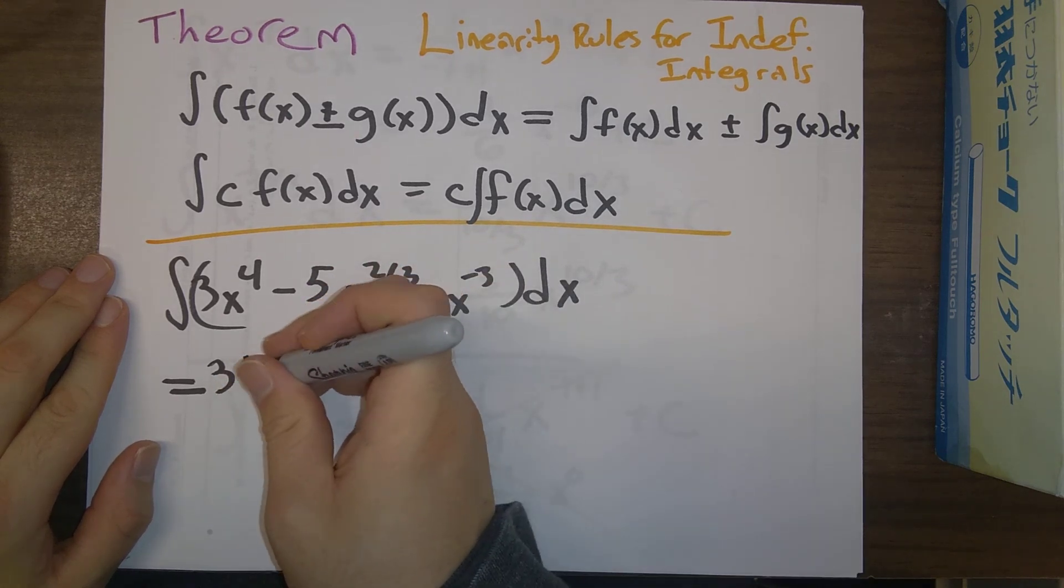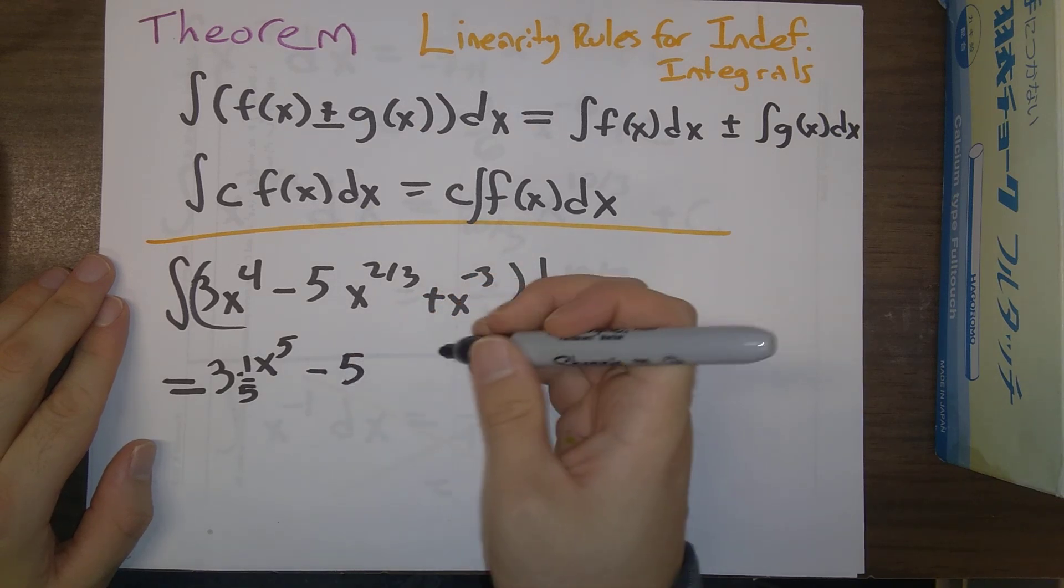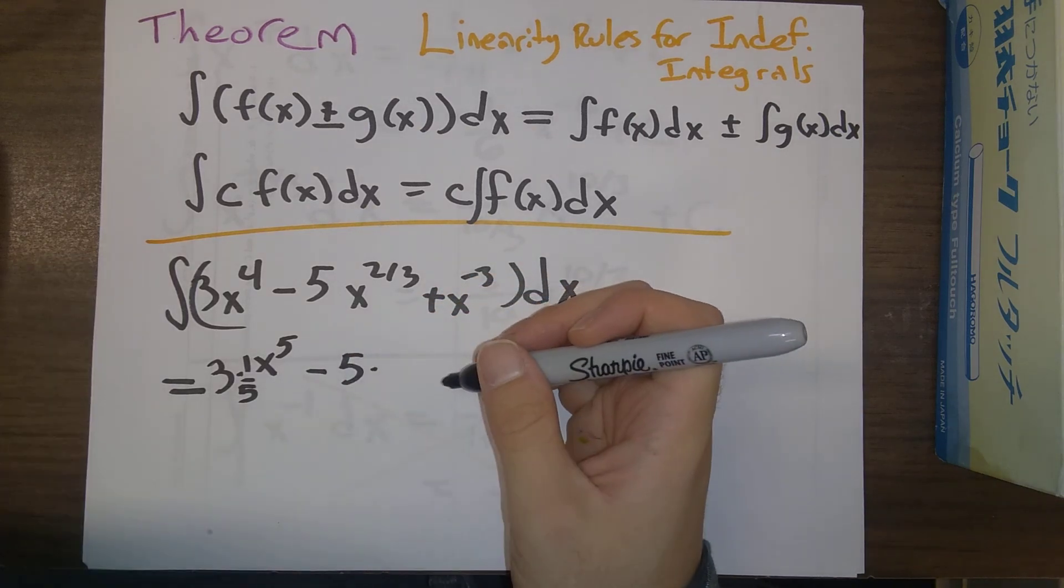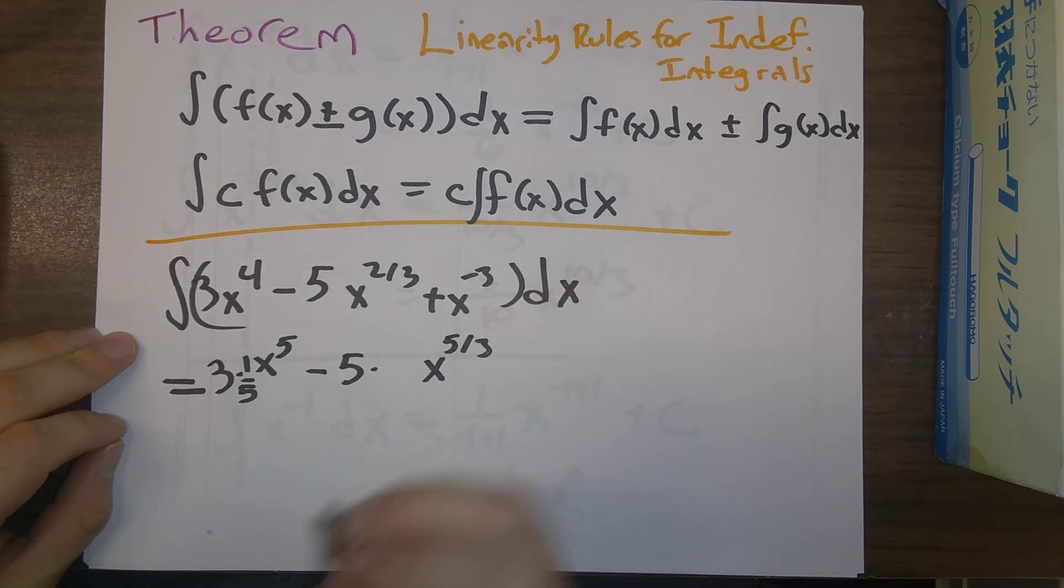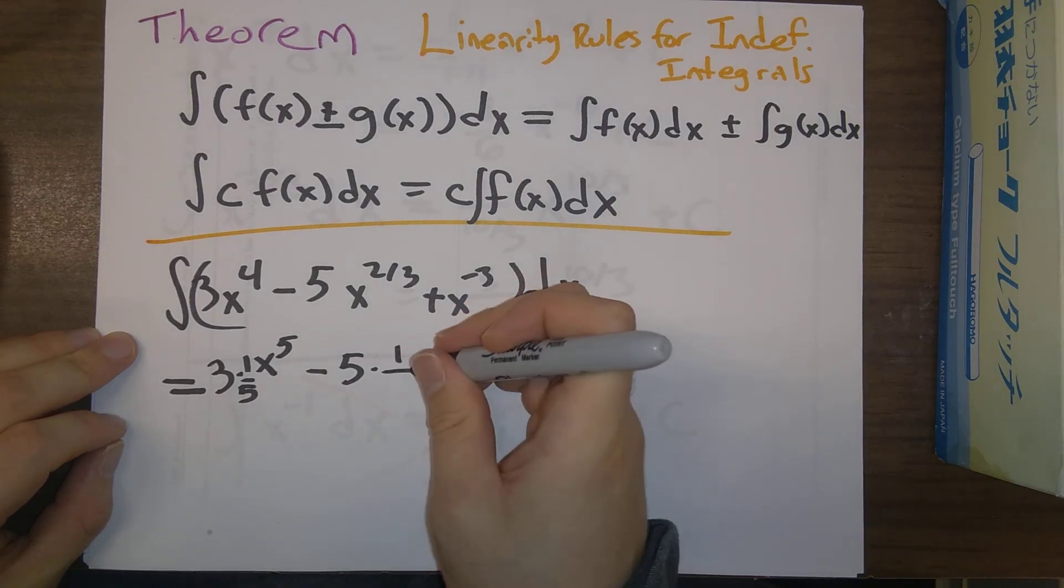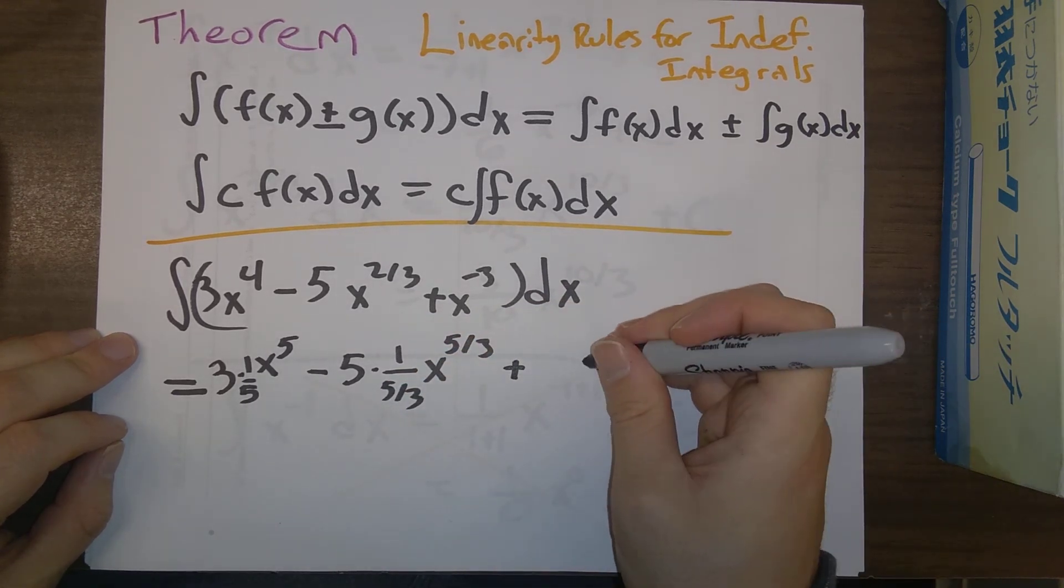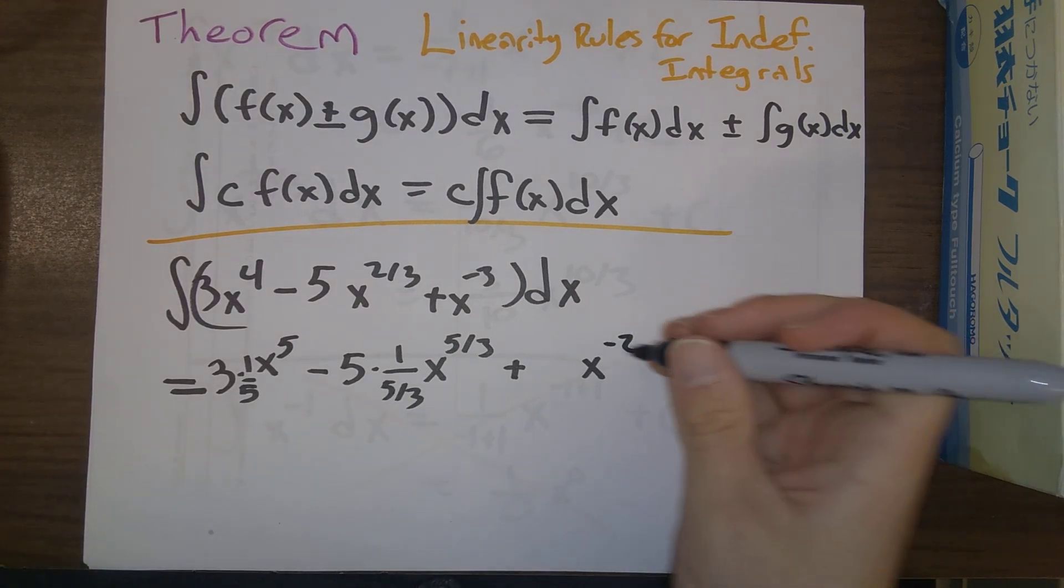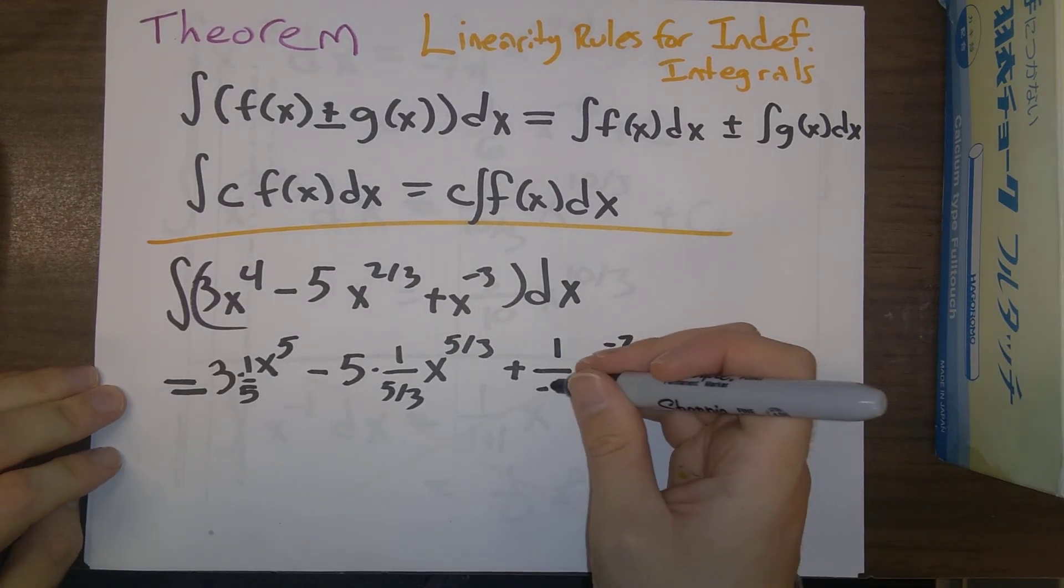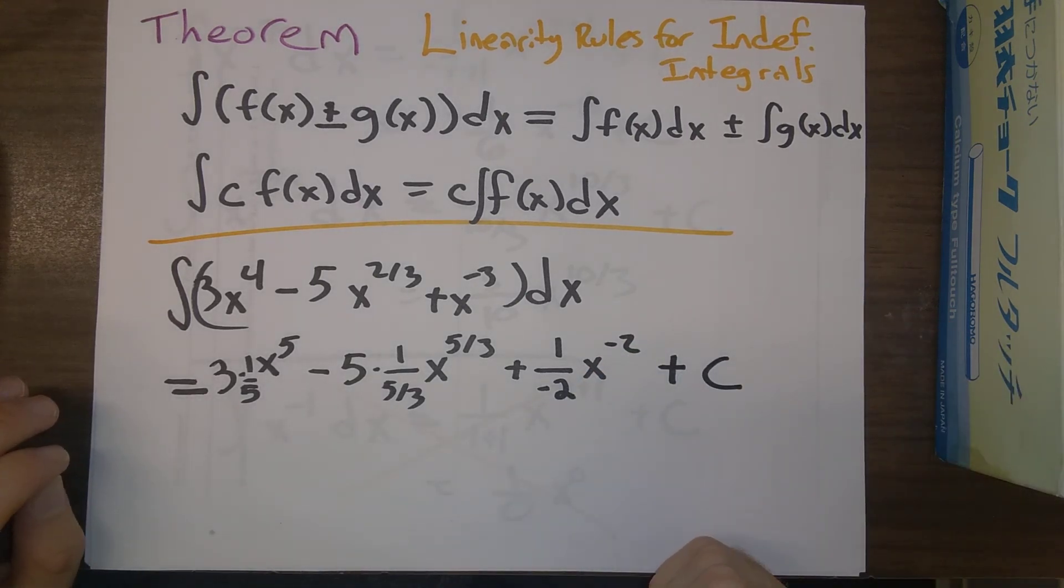Now we have minus 5 times the indefinite integral of x to the two-thirds. So add 1 to two-thirds and we get five-thirds. We have to divide by five-thirds. And then plus, so minus 3 plus 1 gives us minus 2. And we divide by minus 2. And then don't forget our constant.